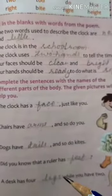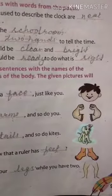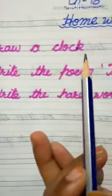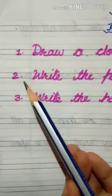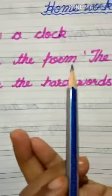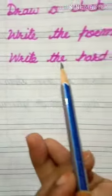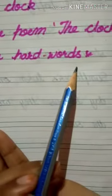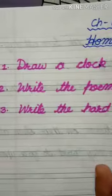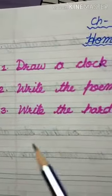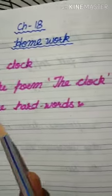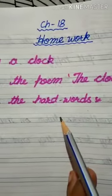Now this question is completed and your chapter is also completed. Your homework is: draw a clock, write the poem The Clock, and write the hard words. You have to do all this in your English notebook. Thank you. Bye.